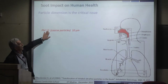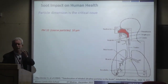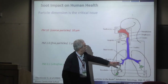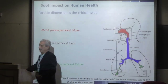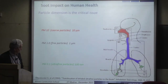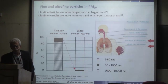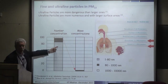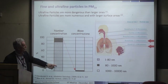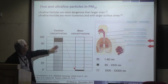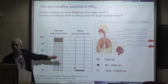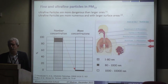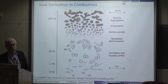Large particles can be blocked in the nasal cavity without major trouble, but very small particles reach the bronchioles and possibly even the brain, according to studies by Professor Robert Dorster at Rochester University. In terms of particle number concentration, small particles dominate; by mass concentration, large particles dominate; but in terms of health effects, the smallest particles are the most dangerous.